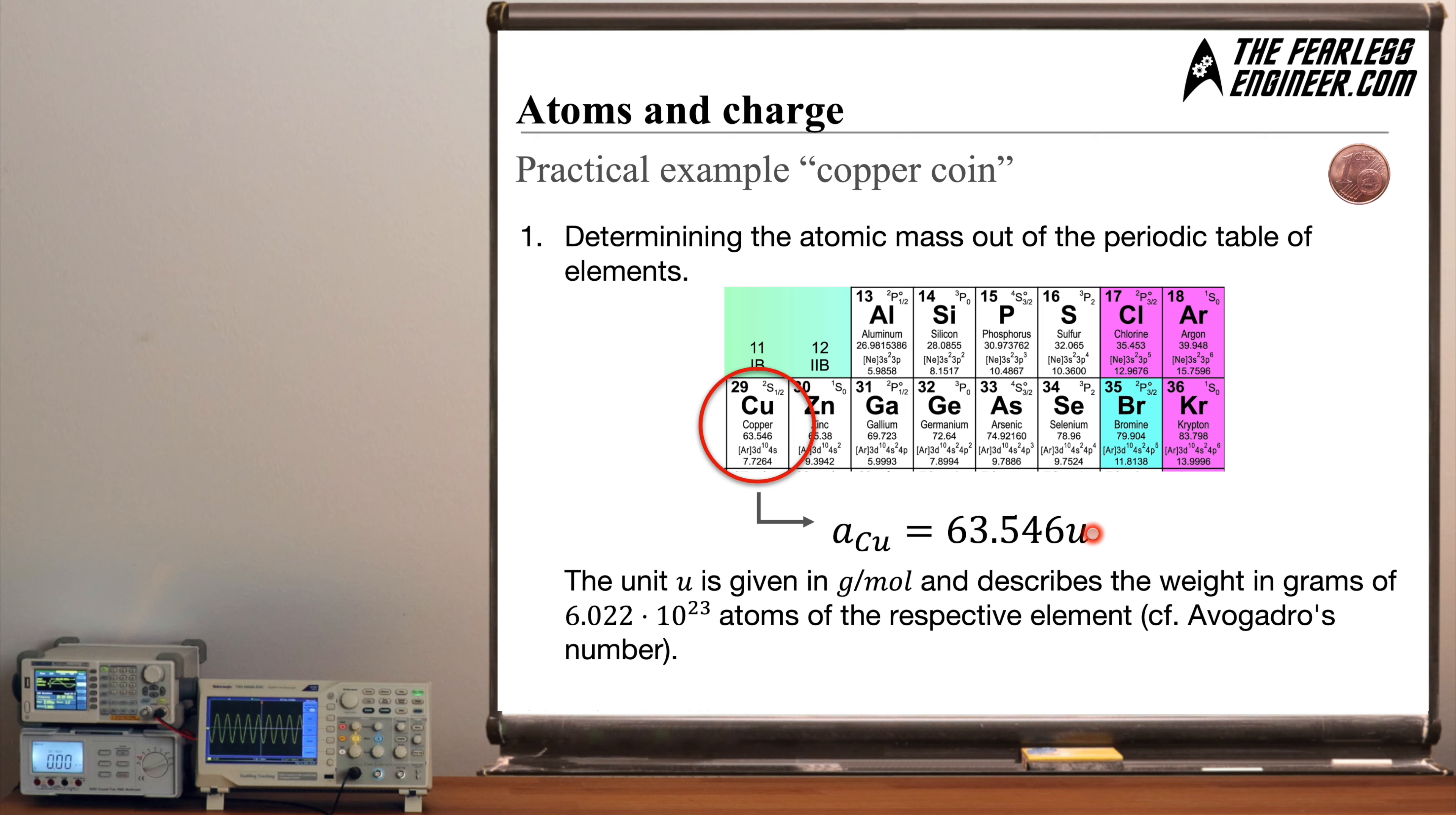First let's look at this number here 63.546. This is the atomic weight of copper and the unit of this atomic weight is abbreviated by using the letter small u and the unit of this atomic weight is given in something called grams per mole. And the idea behind this is to relate copper and every other element to a certain reference element which is hydrogen. And in order to do so we need to make use of Avogadro's constant or Avogadro's number. And the idea behind this is actually quite simple.